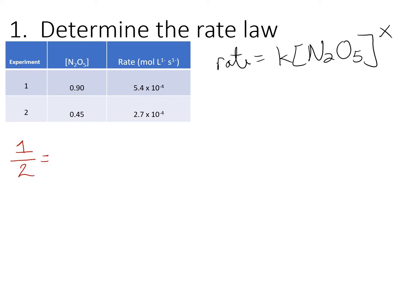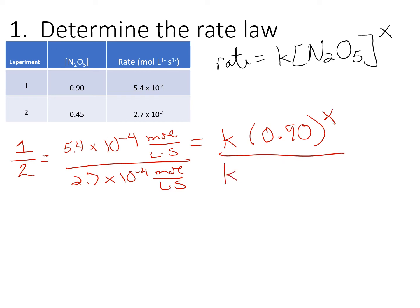My rate for experiment one is 5.4 times 10 to the minus fourth moles per liter second. Rate two is 2.7 times 10 to the minus fourth moles per liter second. On the other side of our equal sign, we have K. We do not know its value yet. We know that N2O5 initially is 0.90 in my first experiment, raised to some power X, divided by K. Its value in the second part is 0.45 raised to some power X.